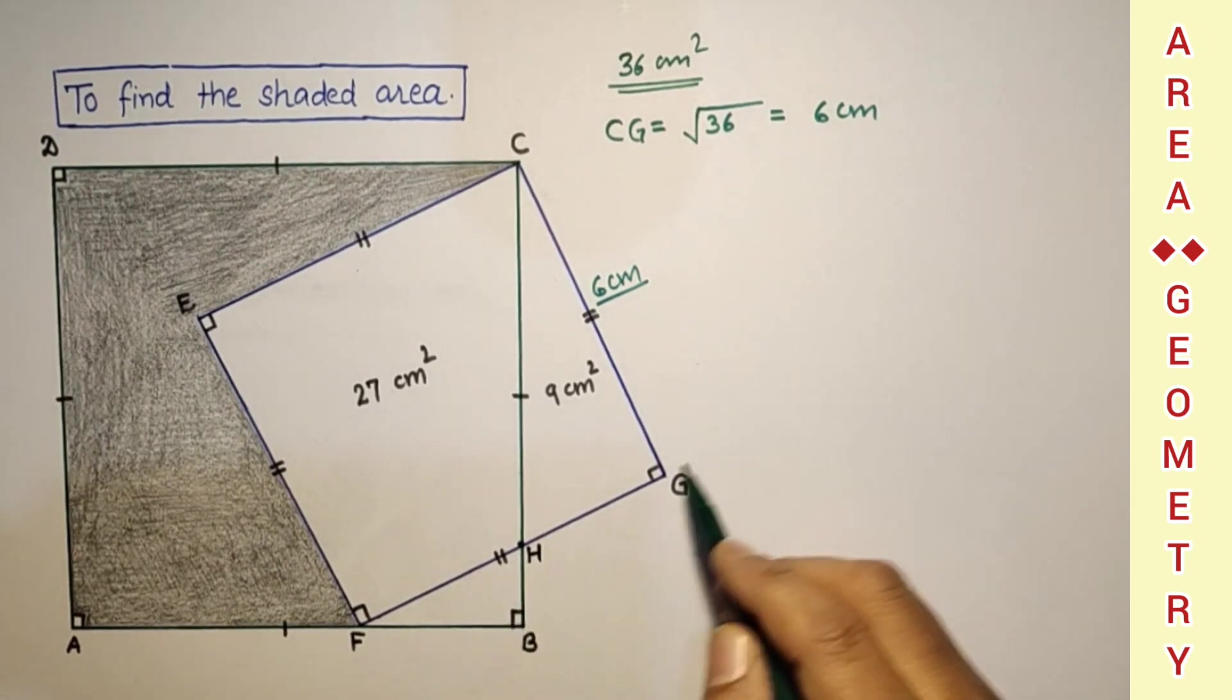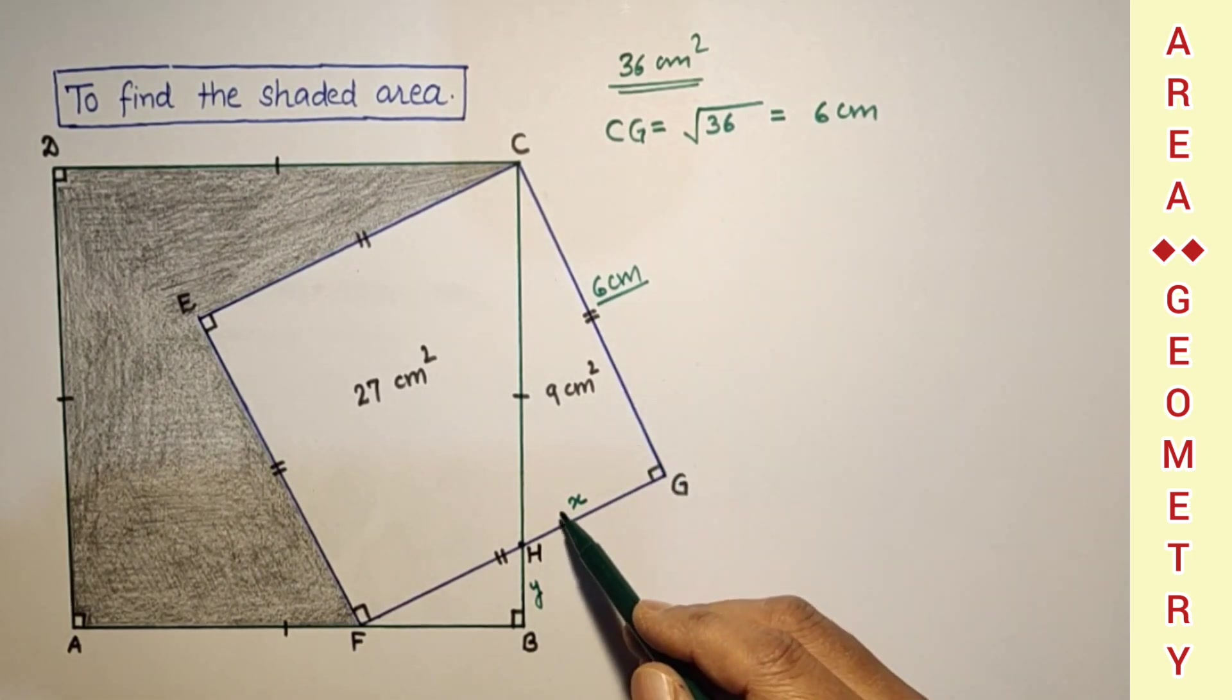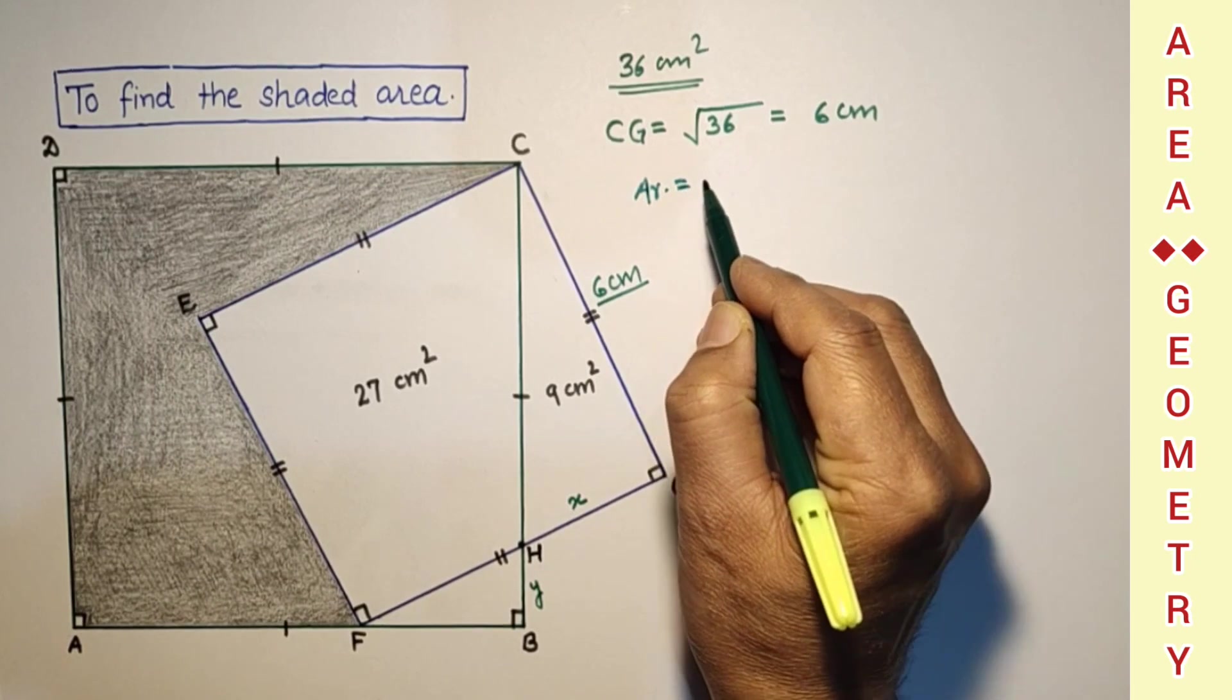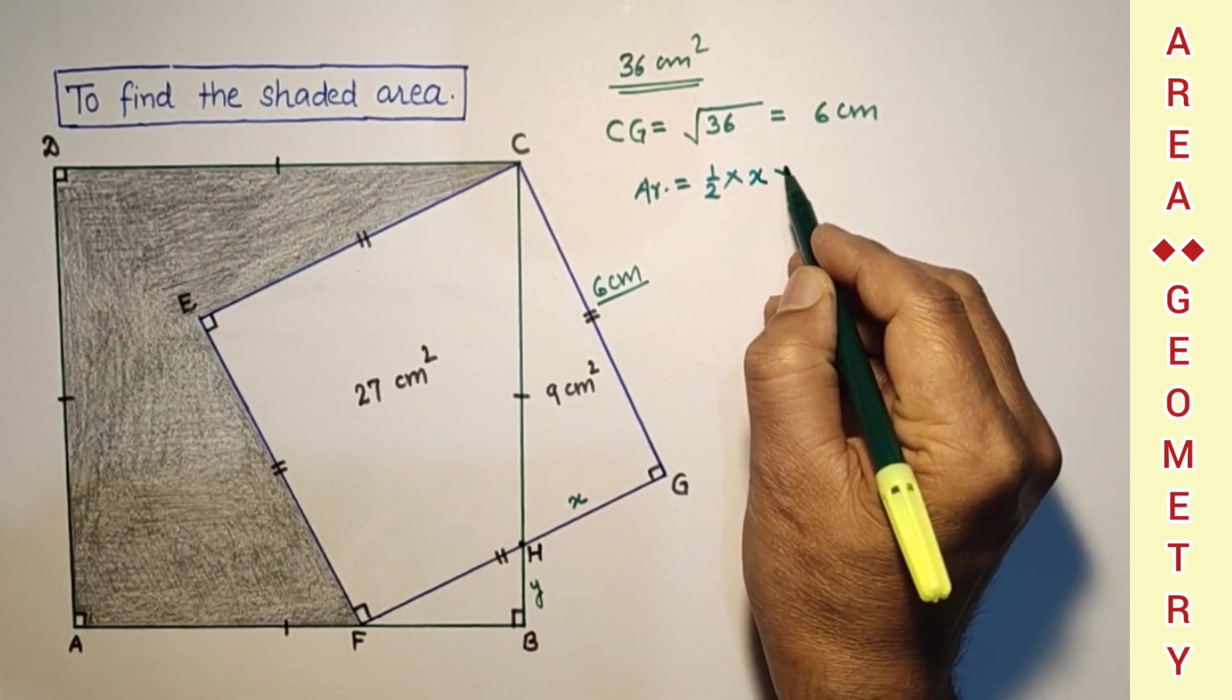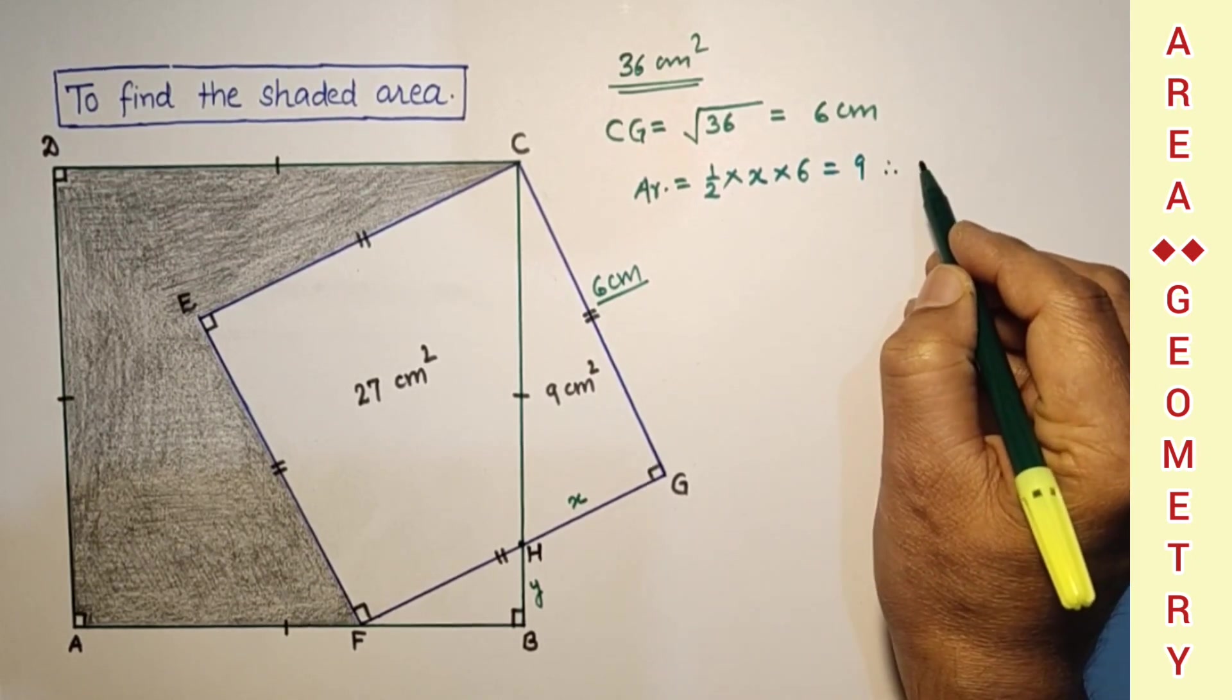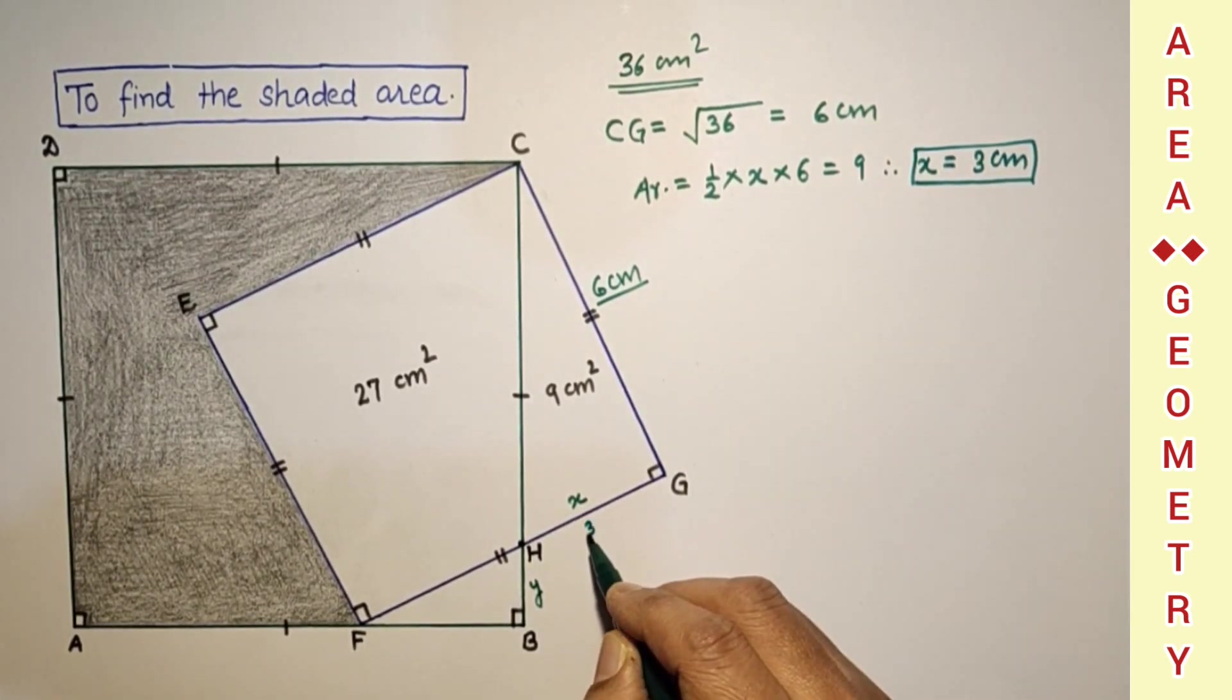Now let this part be X and this part be Y. 6 cm is this, X cm we have assumed this. We can use the area of this triangle. So area is equal to half into base into height, taking base as X and height as 6. But this area is given as 9. So we found X is equal to 3 cm. So this we found 3 cm.